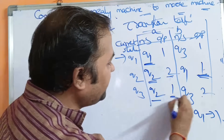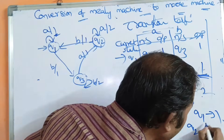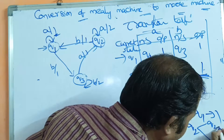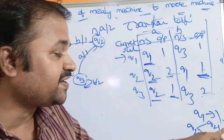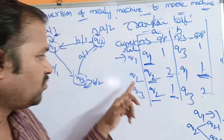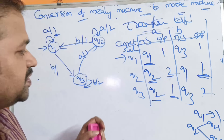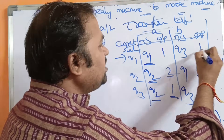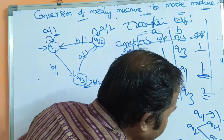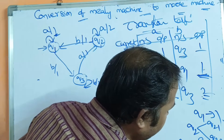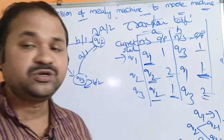Q2 produces two outputs: output 2 in one transition and output 1 in another. So Q2 must be split into two states: Q2-1 with output 1, and Q2-2 with output 2. Similarly, Q3 also produces two outputs — 1 and 2 — so Q3 is split into Q3-1 with output 1 and Q3-2 with output 2.